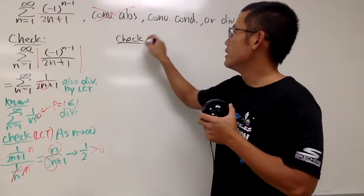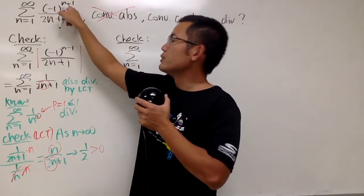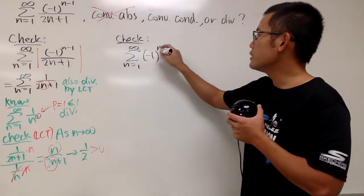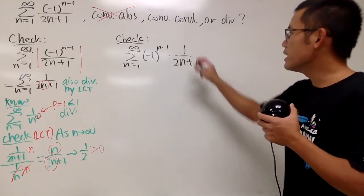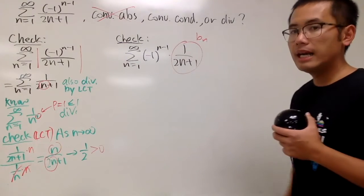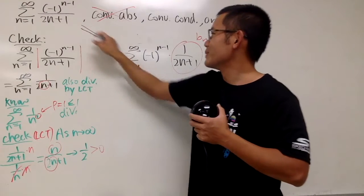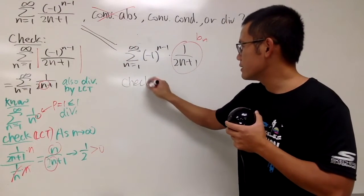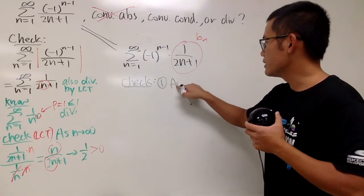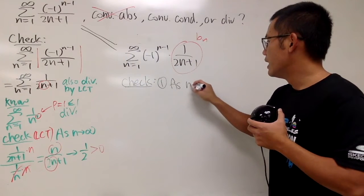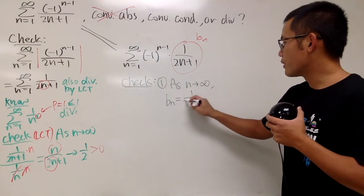So here we go. This is not absolute convergence because the absolute value version diverges, but we check the original series — the sum as n goes from 1 to infinity of (-1)^(n-1) times 1/(2n+1). This b_n equals 1/(2n+1), and we apply the alternating series test. First check: does b_n go to 0 as n goes to infinity? The limit of 1/(2n+1) as n→∞ — putting infinity in the bottom — does go to 0. It checks.